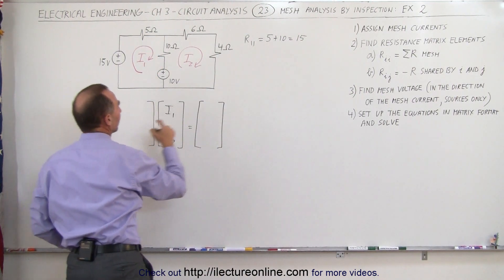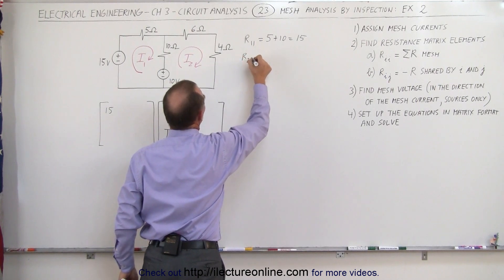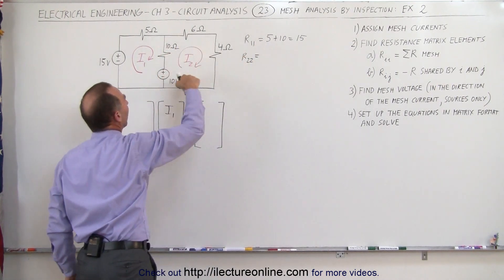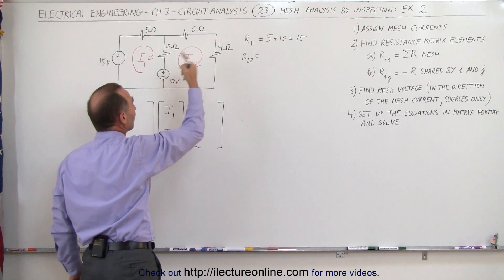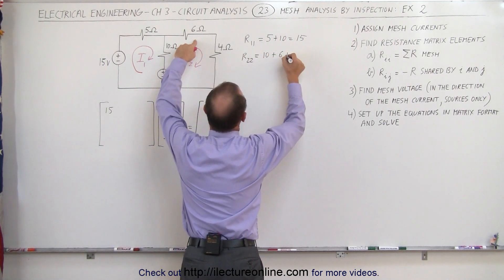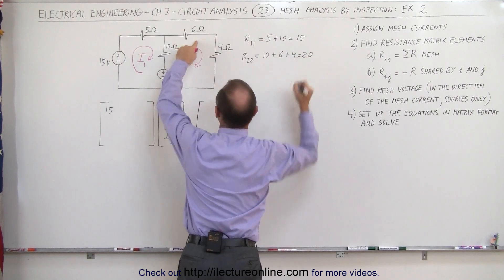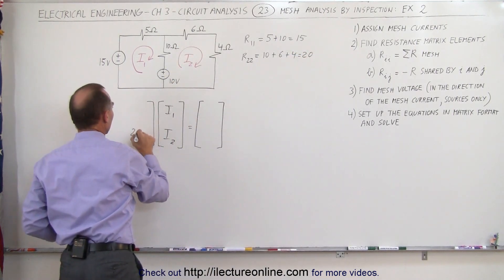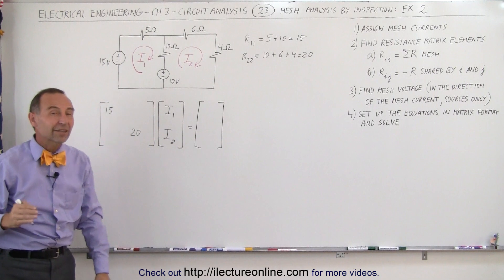To find this diagonal element, the second one, R22, we go around the loop and we add up all the resistances. Again, it doesn't matter what the direction is. Here we get 10 plus 6 plus 4, which is 20, and that goes down here in this location. Now we have the diagonal elements, now we want to get the off diagonal elements.